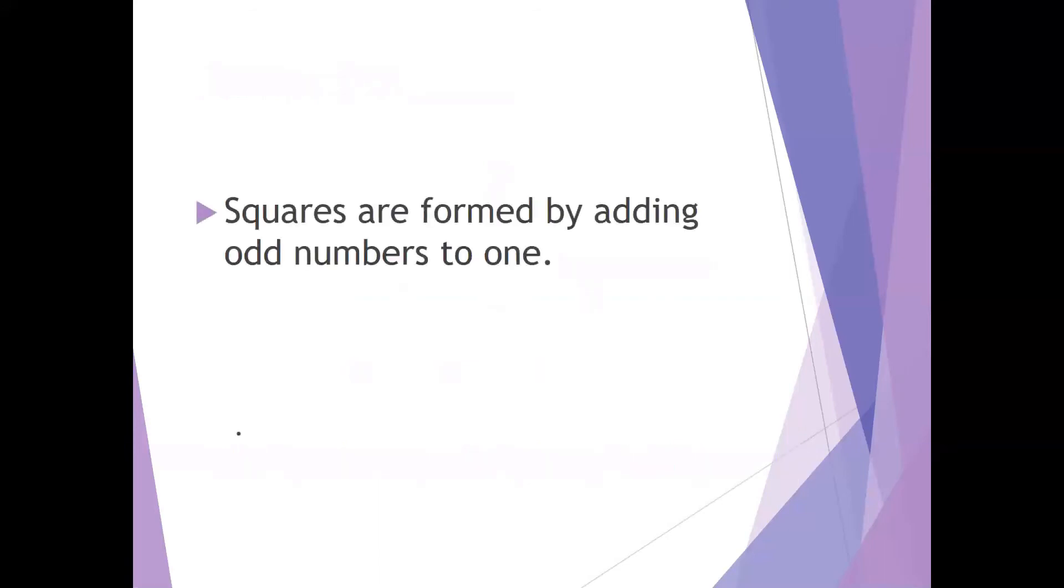Now, we can also talk about squares being formed by adding odd numbers to one. So we start there with that tiny dot one. We add the next odd number three, and we get a square, right? And the square is two squared, equaling four. And so we have the next set of odd numbers. So we add five more dots, and we have a square with nine dots. Three squared equals nine.